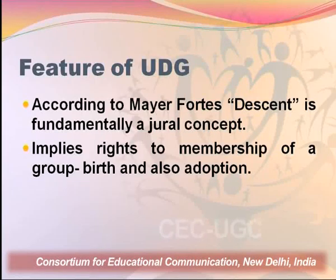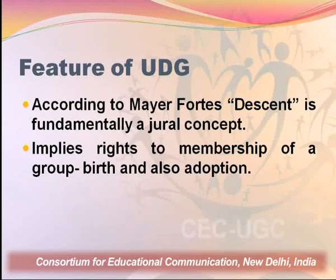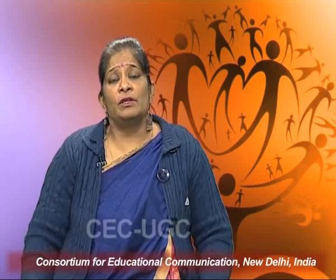When we look into the features of the unilineal descent group, there was a study by Meyer Fortes, who identified the main features. According to him, it is a jural concept — it is considered jural because it legitimizes the inheritance of property; ownership of property is through the line of descent. It also gives you access to membership of a group. The descent determines your membership — in a patrilineal group, you are given membership in your father's group at birth.